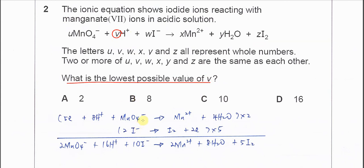First we need to construct the first half equation. So permanganate forms manganese ion. Here we have four oxygen on the right hand side, so add four H2O, and we balance the H+ on the left hand side. So it's 8H+.